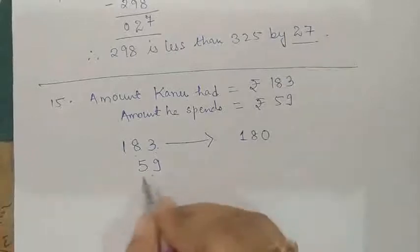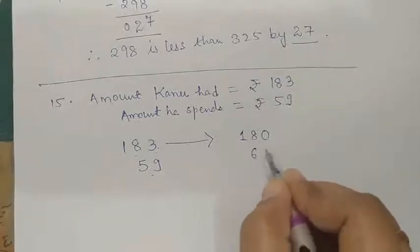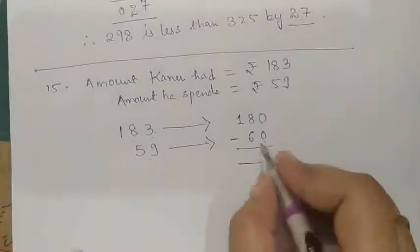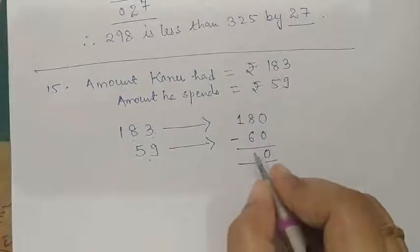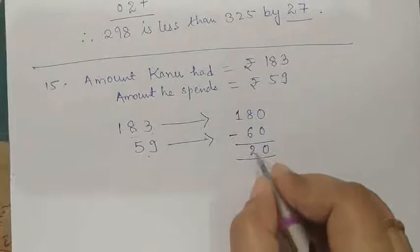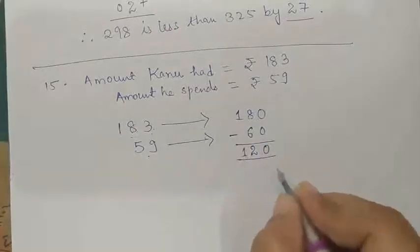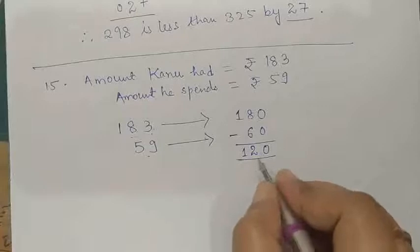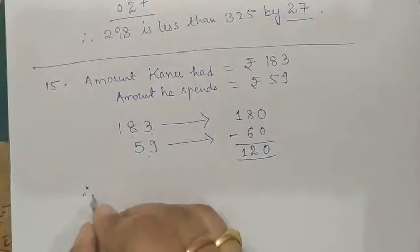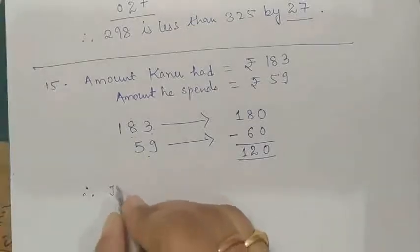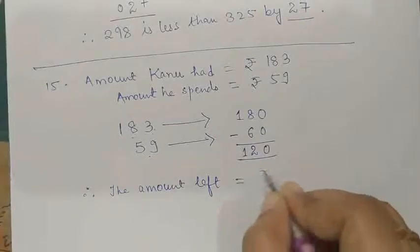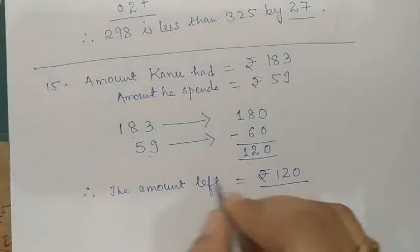To find the amount left we always subtract. So here we go: 0 minus 0 is 0, 8 minus 6 is 2, and 1 minus 0 is 1. Therefore, we will be left with 120 rupees. The amount left with Kanu is equal to rupees 120.